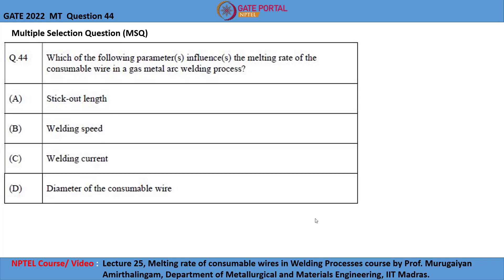Let us look at question 44 of GATE 2022, which is a multiple selection question. Which of the following parameters influence the melting rate of the consumable wire in a gas metal arc welding process? Option A: stick out length. Option B: welding speed. Option C: welding current. Option D: diameter of the consumable wire. One or many options can be correct in this.